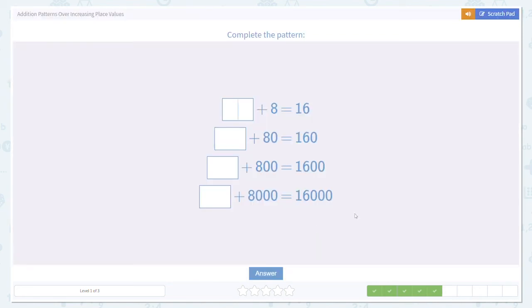Here we've got another example. First, we check that our pattern is happening. Are we adding zeros to the 8? Looks like we are. Are we adding zeros to the 16? Again, looks like we are, adding one zero each time. That means all we need to do is solve the first equation. 8 plus 8 is 16, and that will give us the rest of the answers.